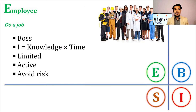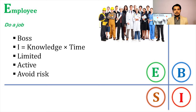The first quadrant is the E Quadrant — employees. Employees are people who work for someone else and make money by trading their time and skill. They have a boss or an employer. An employee's total life is controlled by their boss, who decides when they should wake up, sleep, come to the office, leave the office, and take their meals.